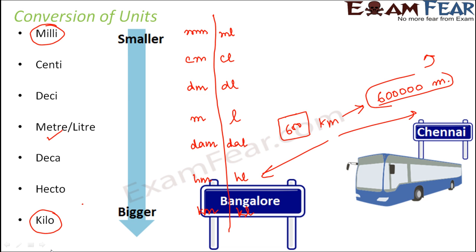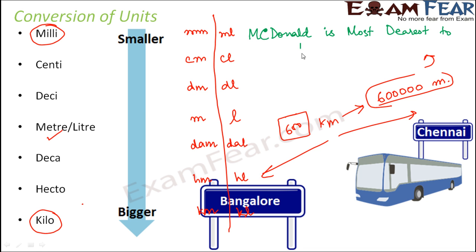Our final goal is to convert, for example, kilometres to metres or millilitres to kilolitres. To do this easily, you must remember the sequence: milli, centi, deci, metre, deca, hecto, kilo. To help remember, we use a memory tip relevant to children: McDonald's is the most dearest to happy kids.